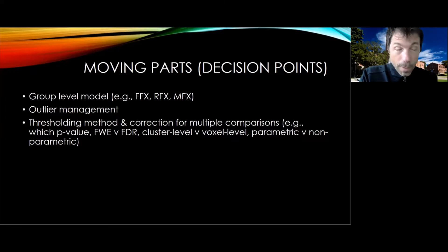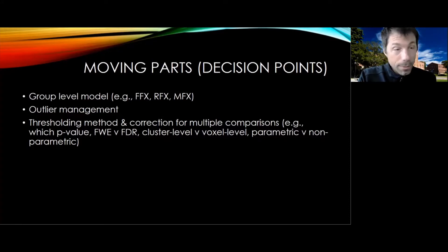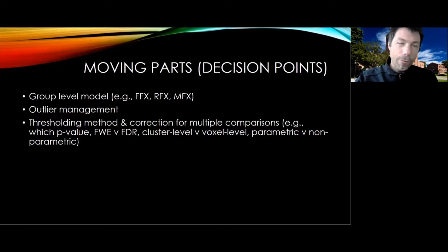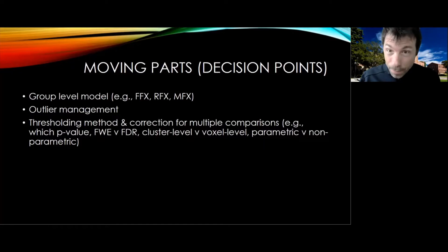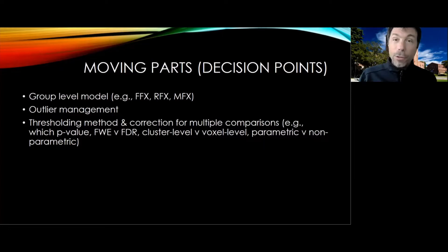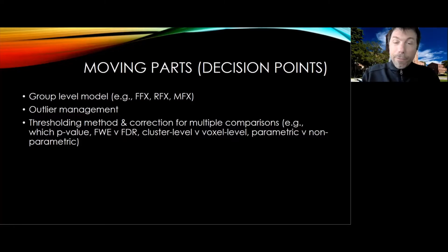How are you going to manage outliers? What are you going to do about them? And the exact method that you use for thresholding is also very important, for correcting for multiple comparisons. Your decision points are what p-value to pick, whether you do family-wise error versus FDR, cluster level versus voxel level, parametric versus non-parametric. Every choice makes you fall into a different potential violation of the assumptions.